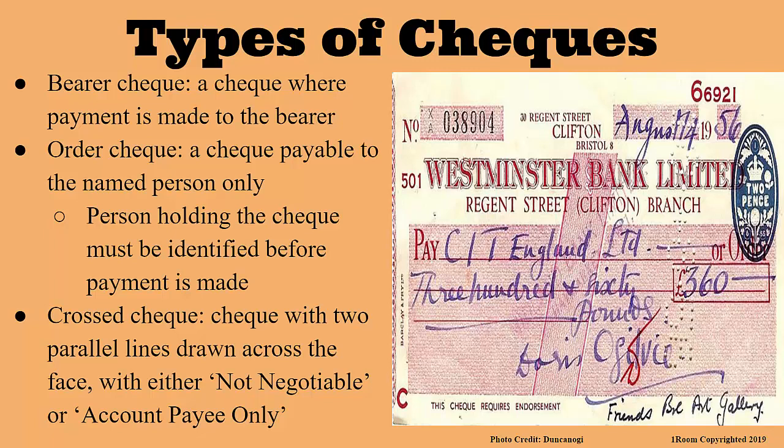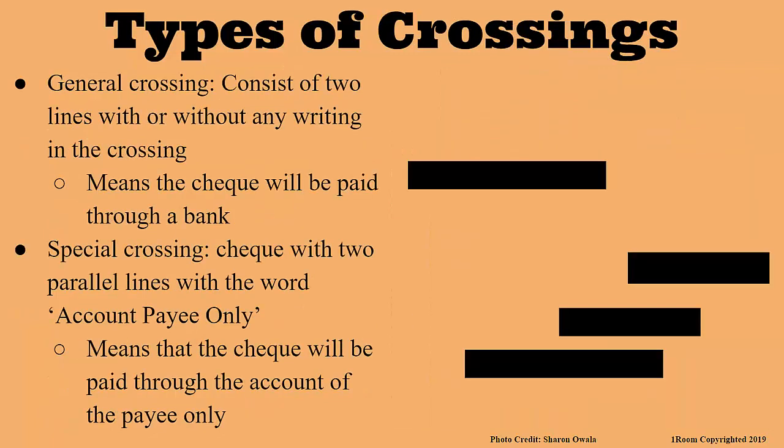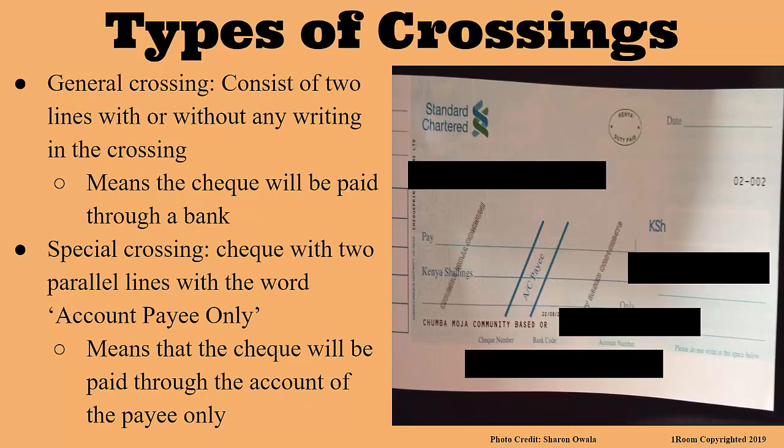Do the crossings have any meaning? Yes, they do. We have two types of crossings: general crossing and special crossing. For general crossing, the cheque is crossed with two lines, with or without any writings. It means that the cheque will be paid through a bank.